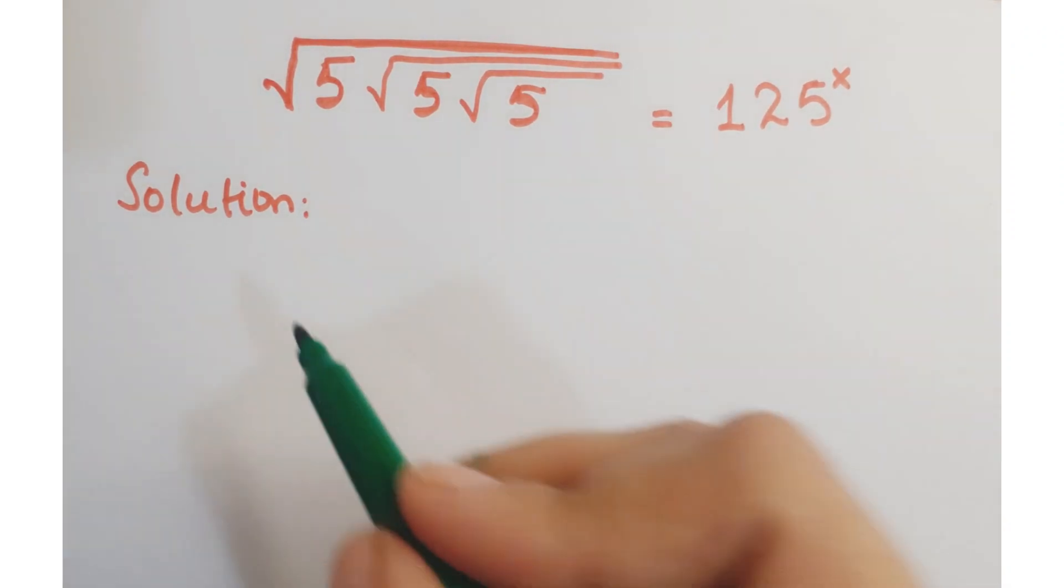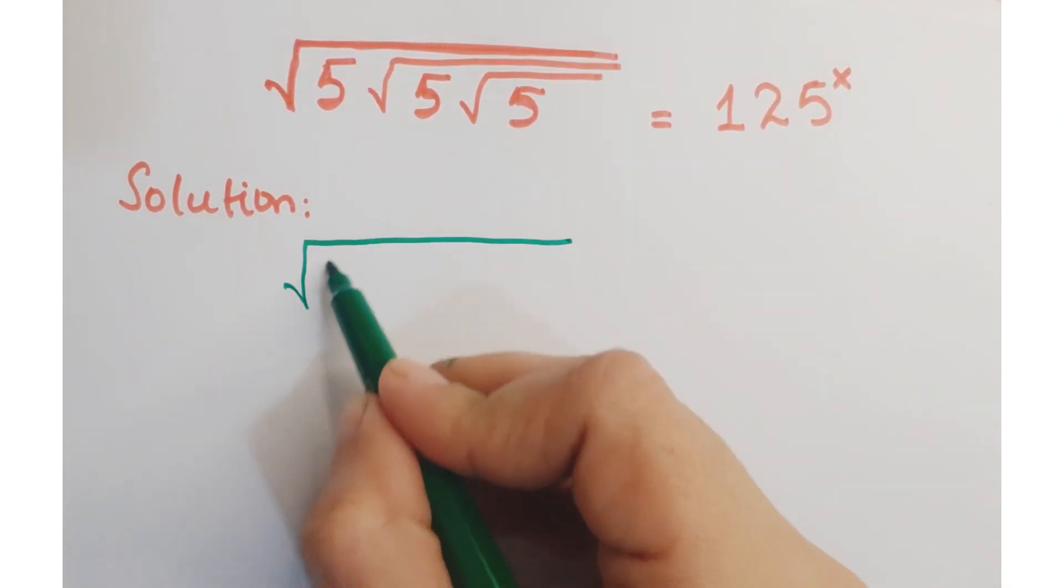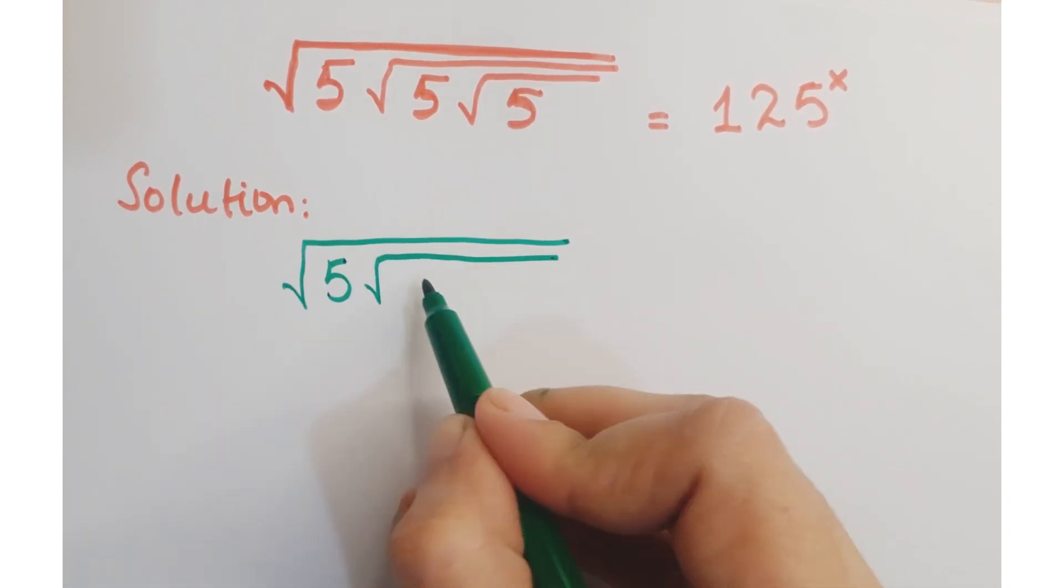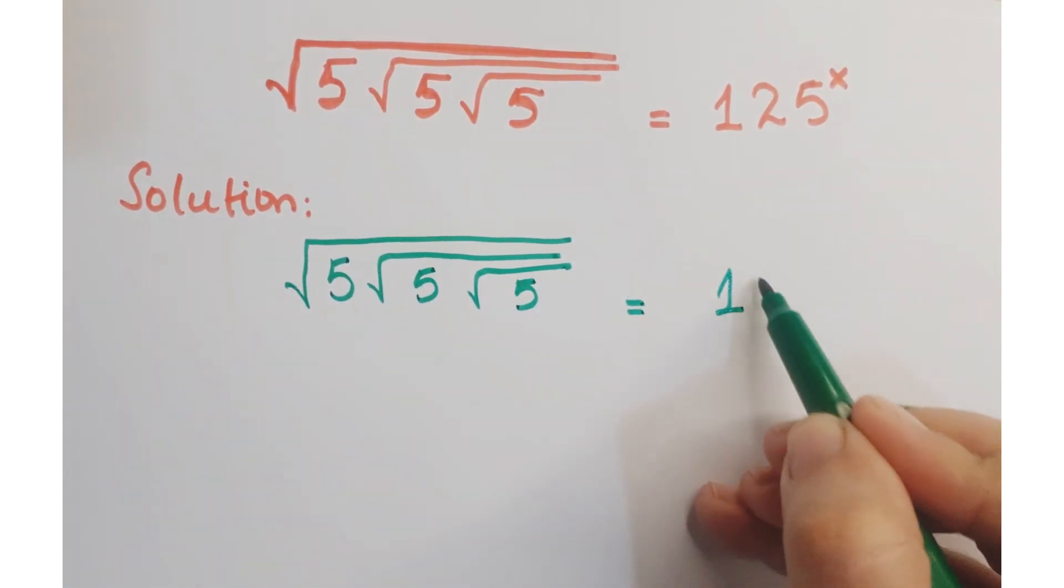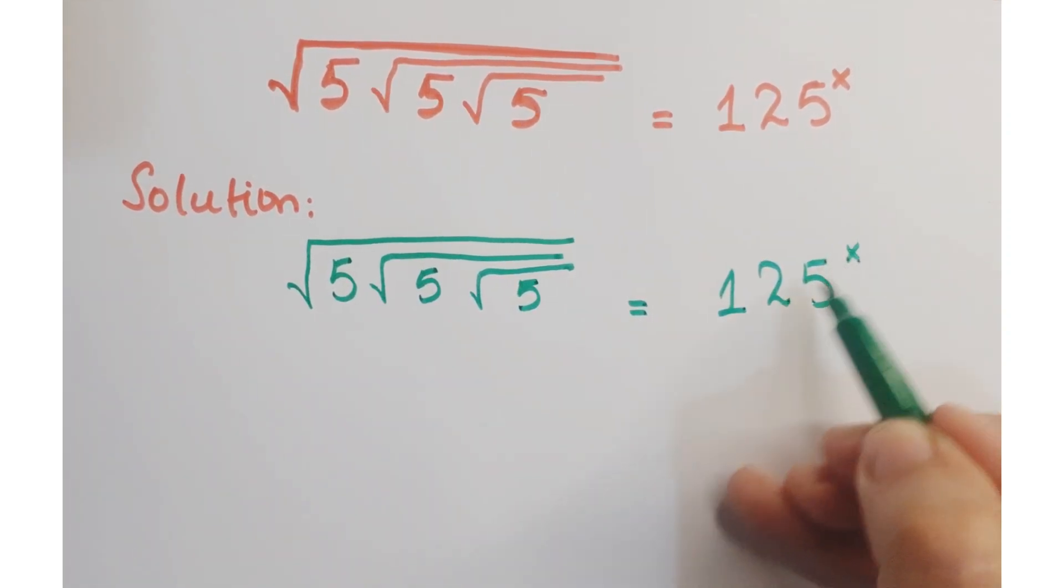Guys, look at this question. The question is: square root of 5 within square root of 5 within square root of 5 equals 125 whole to the power x.